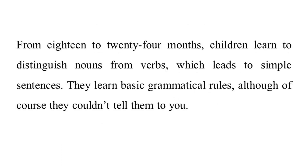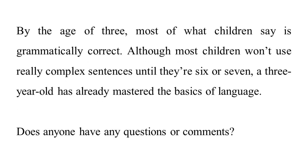From eighteen to twenty-four months, children learn to distinguish nouns from verbs, which leads to simple sentences. They learn basic grammatical rules, although of course they couldn't tell them to you. By the age of three, most of what children say is grammatically correct. Although most children won't use really complex sentences until they're six or seven, a three-year-old has already mastered the basics of language.